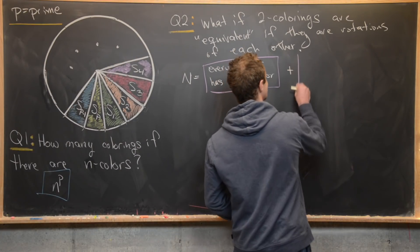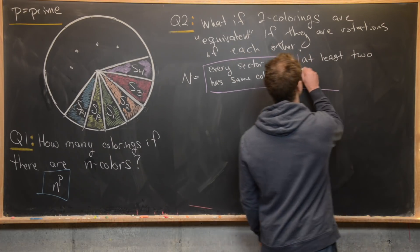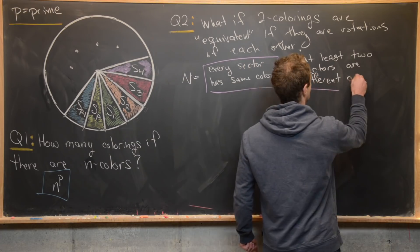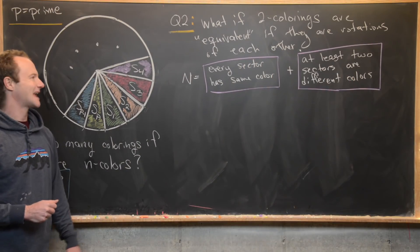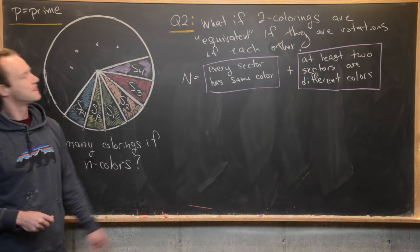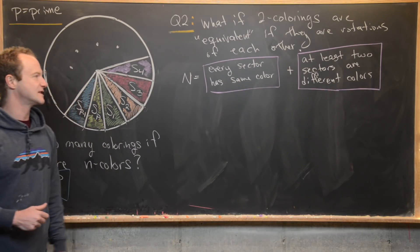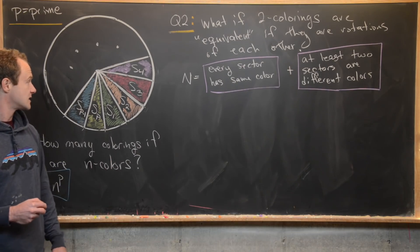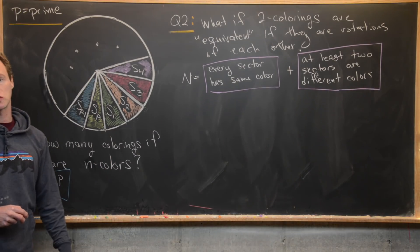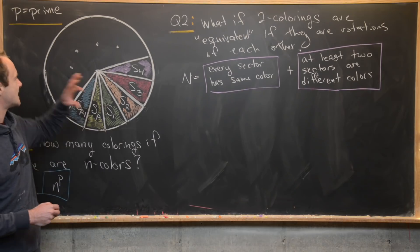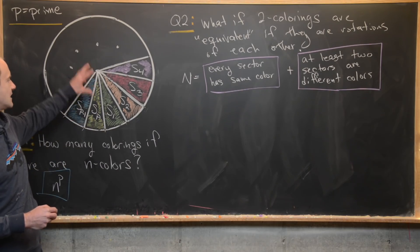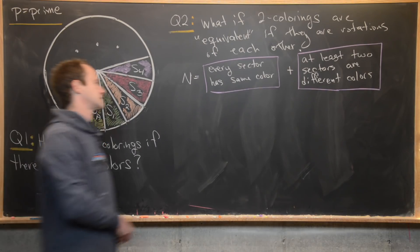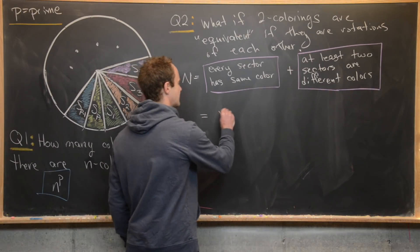The second case is at least two sectors are different colors. For the first type, where every sector has the same color, there are n total choices — everything colored green, everything blue, everything orange — for n total colors. So we have n for this.